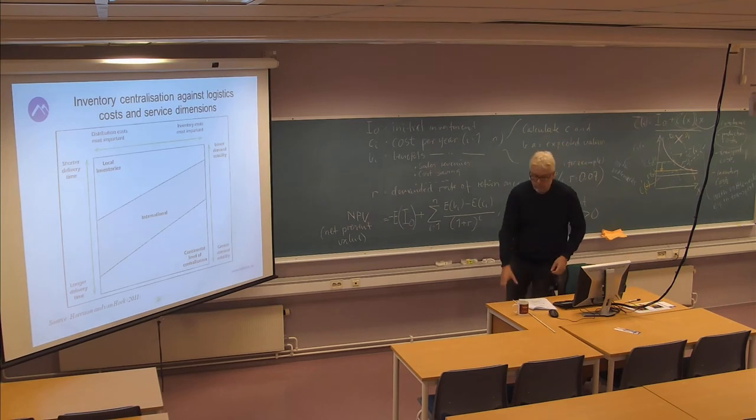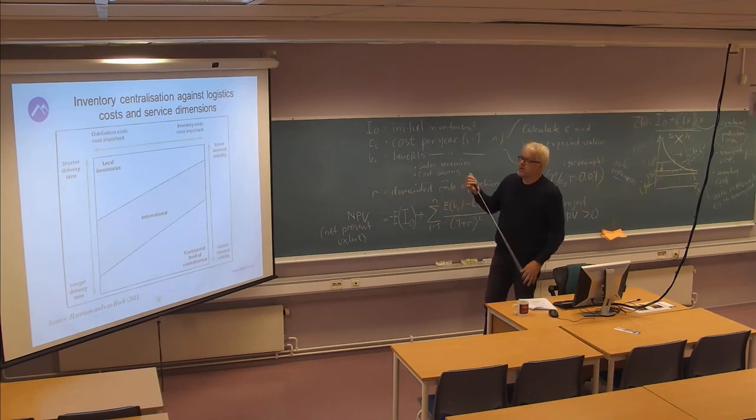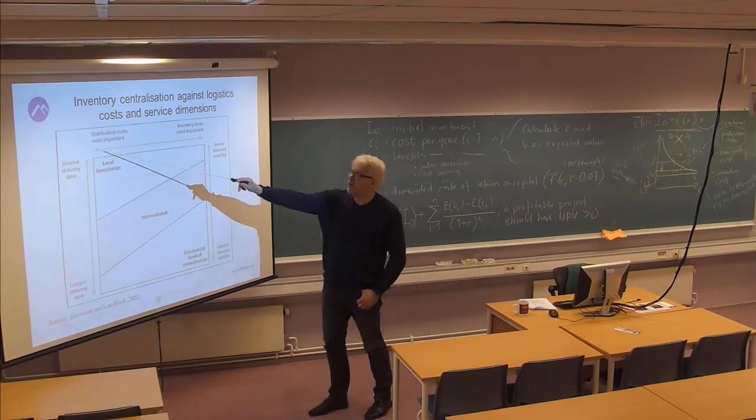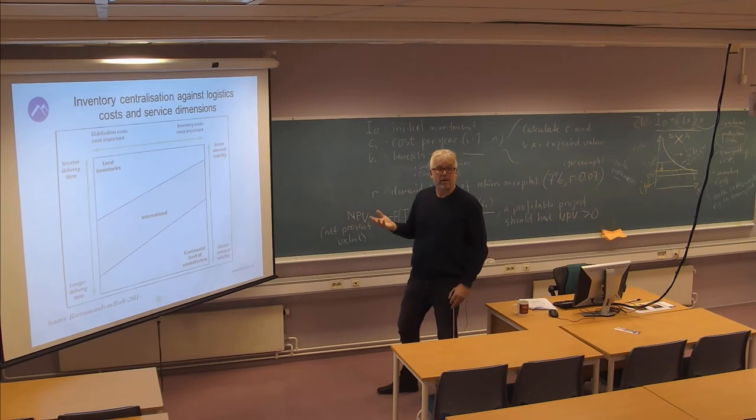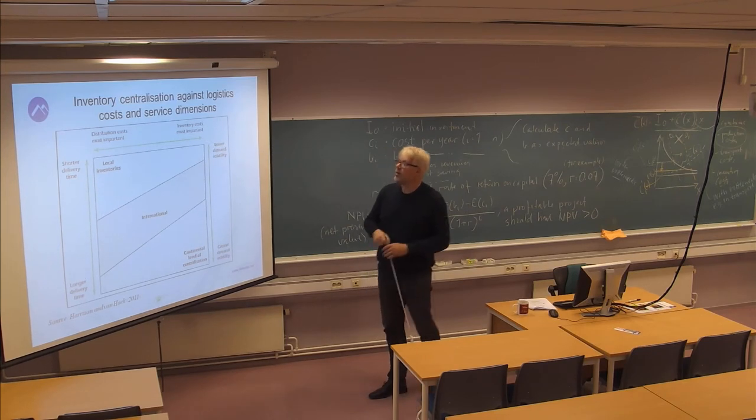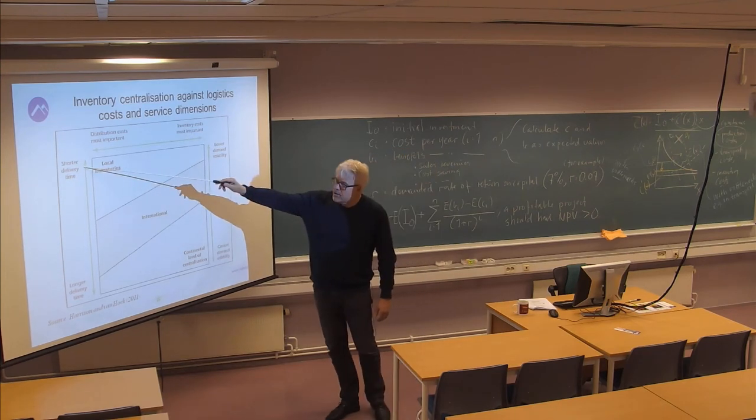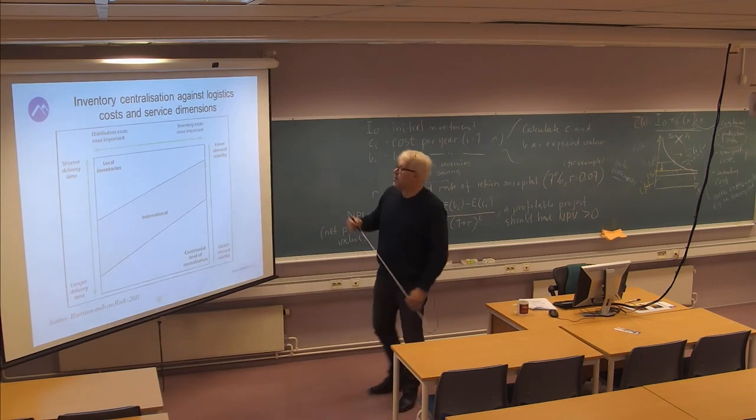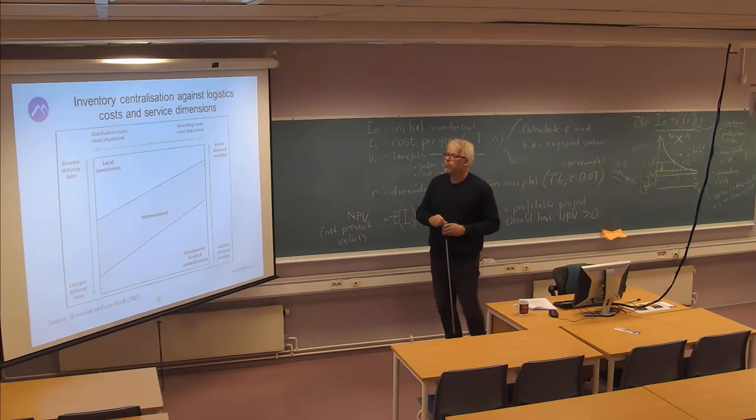This is just a simple figure to show some trade-offs here. You have a trade-off between distribution costs, most important for communication with end customers. Inventory cost, most important for this product in question. Demand for shorter delivery time versus longer delivery time that customers can live with. And you have demand volatility here, lower, greater.